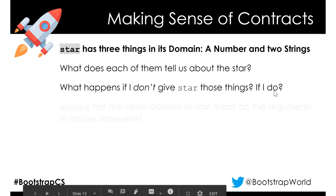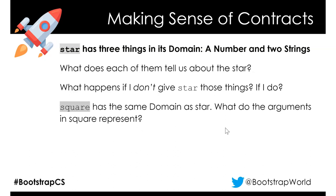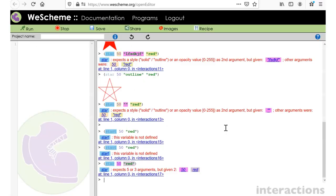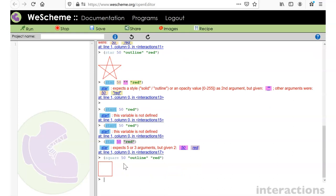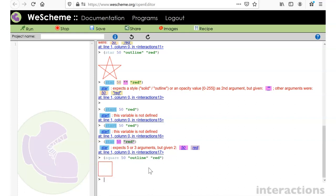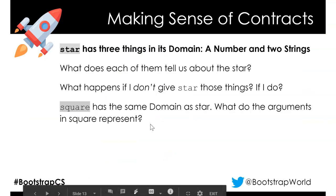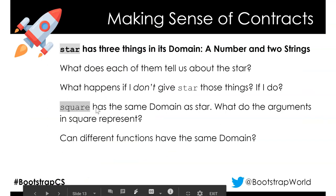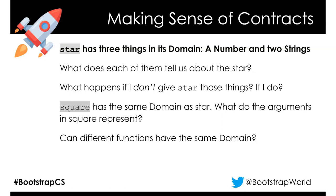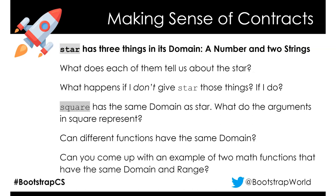Square hopefully was one of the functions you discovered. It has the same domain as star - 50 for size, 'outline' for style, 'red' for color. They represent the exact same things in square as they did in star. So can different functions have the same domain? Clearly yes: plus and minus both take numbers as input; square and star both take a number and two strings. Plus and minus are simple examples of two math functions with the same domain and range.